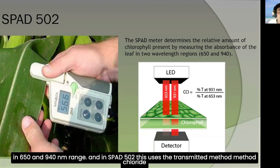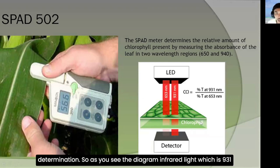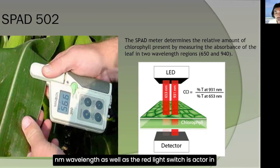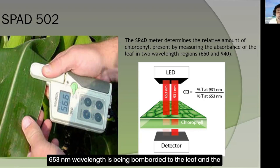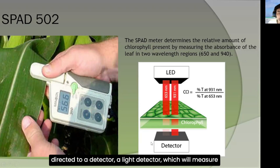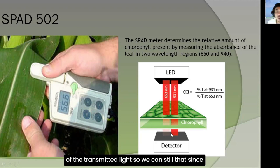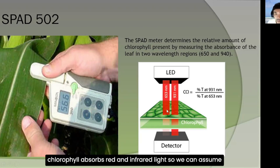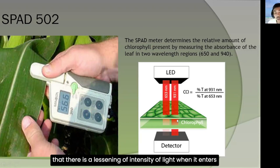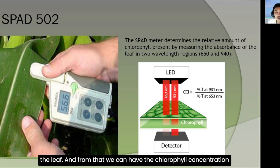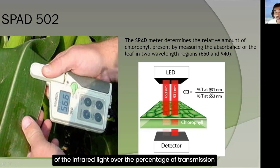In the SPAD 502, using the transmissive method, infrared light at 931 nm wavelength and red light at 663 nm are bombarded to the leaf. The transmitted light exiting the leaf is directed to a light detector which measures the relative concentrations of the transmitted light. Since chlorophyll absorbs red and infrared light, there is a lessening of intensity when light enters the leaf. From this, the chlorophyll concentration index (CCI) is the ratio of the percentage of infrared light transmission over the percentage of red light transmission.